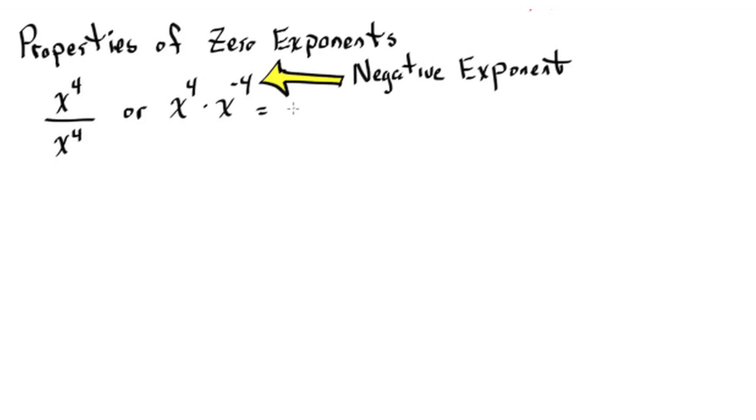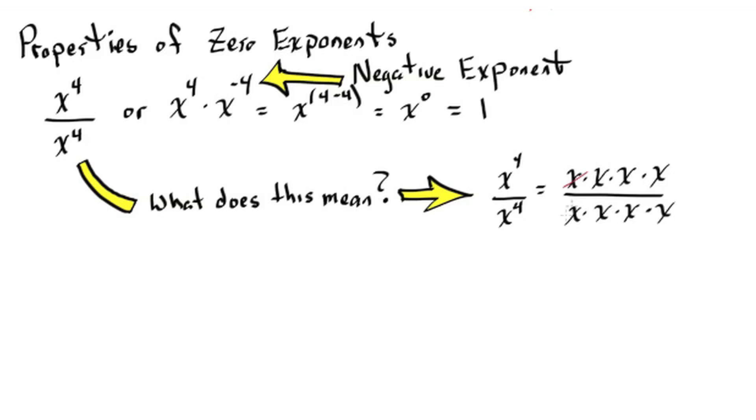Properties of zero exponents. We're going to take a look at x to the fourth over x to the fourth in two different ways. The first one we can think of the x to the fourth in the denominator as a negative exponent and when we add the exponents we get zero. So x to the zero would be equal to one. And the second way we can see the factors all expanded and all the x's in the numerators are going to cancel with all the x's in the denominator which will give us one.